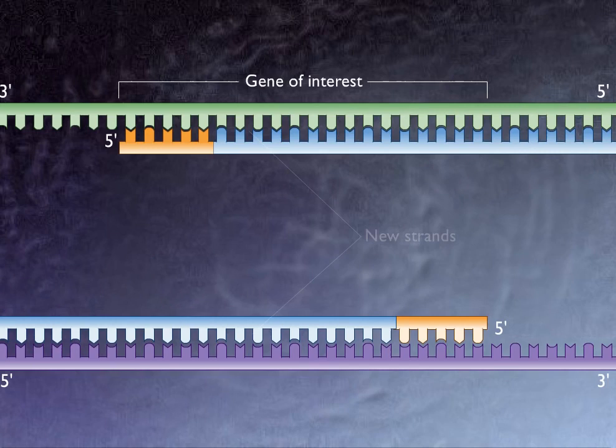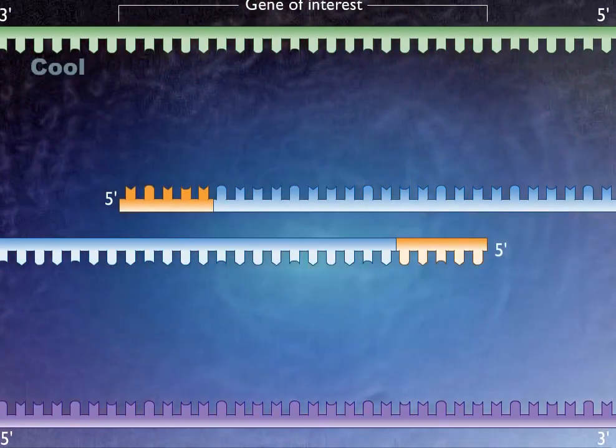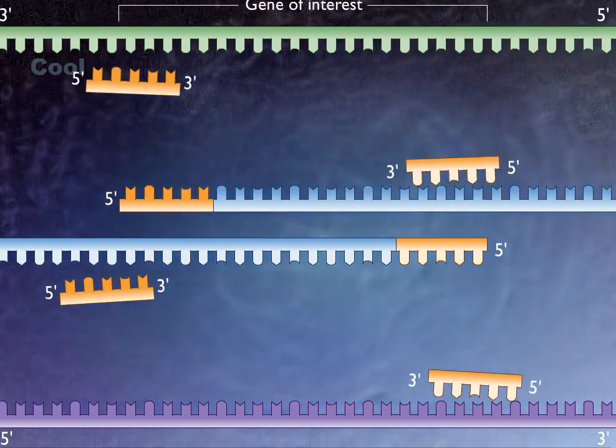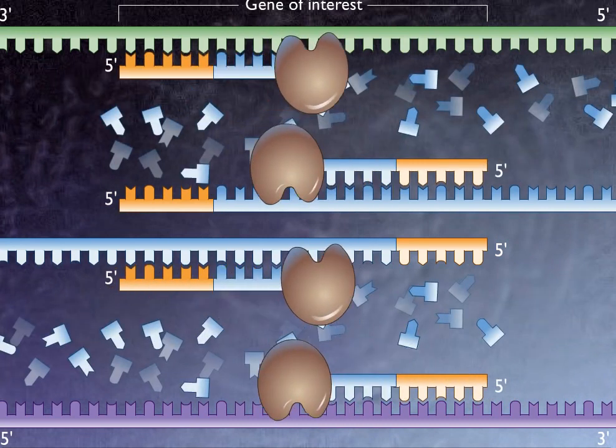The temperature is raised again to separate the DNA strands and then lowered sufficiently to allow the primers to attach. Taq polymerase now synthesizes another set of new complementary strands.